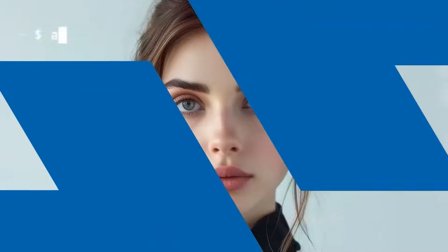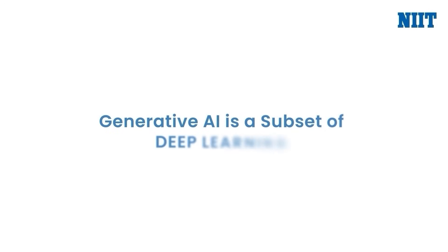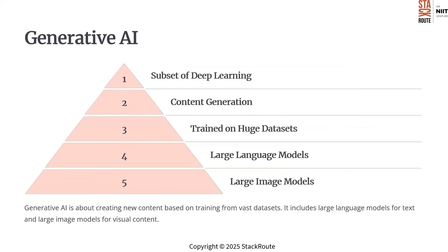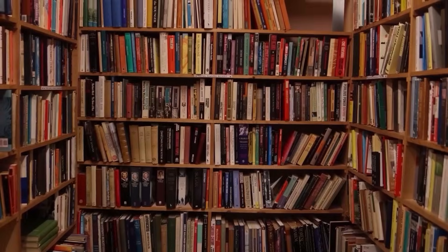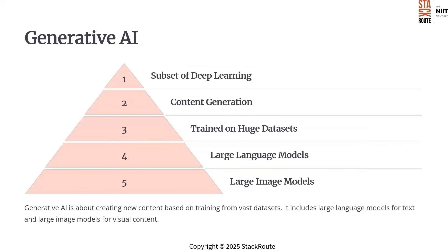These advancements have paved the way for the next big thing: generative AI. Generative AI is a subset of deep learning and it is all about creating new content. Unlike traditional AI models that focus on tasks like classification or prediction, generative AI generates entirely new data based on what it has learned. Think of it like this — if you have read a hundred books on human behavior, you can answer any questions about it in your own words.